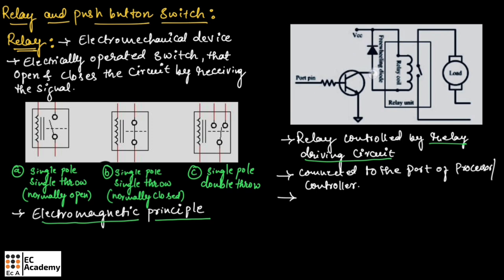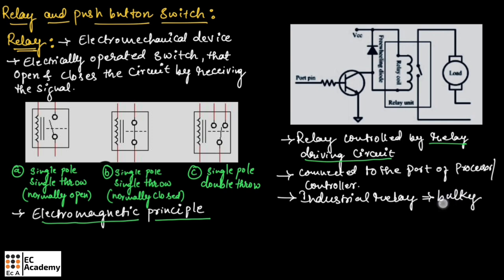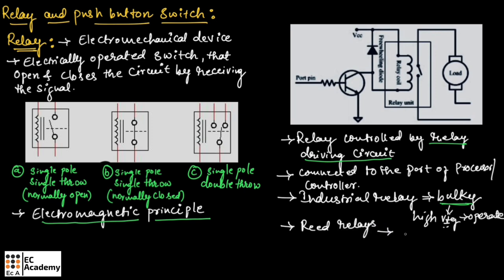A freewheeling diode is used for freewheeling the voltage produced in the opposite direction when the relay coil is de-energized. The freewheeling diode is essential for protecting the relay and the transistor. Most industrial relays are bulky, which means they are huge in size and require high voltage to operate. Special relays called reed relays are available for embedded applications requiring switching of low voltage DC signals.